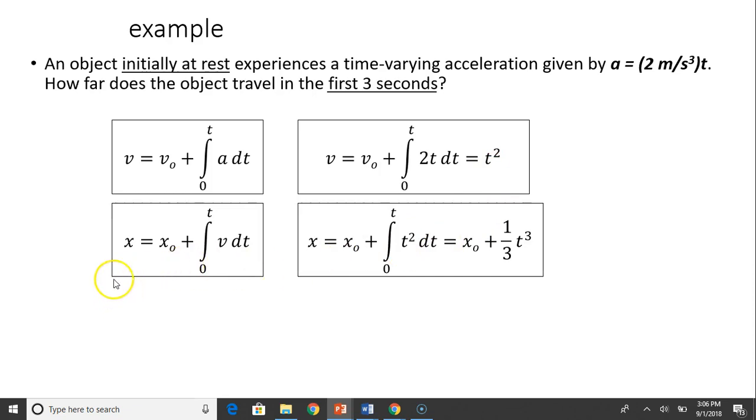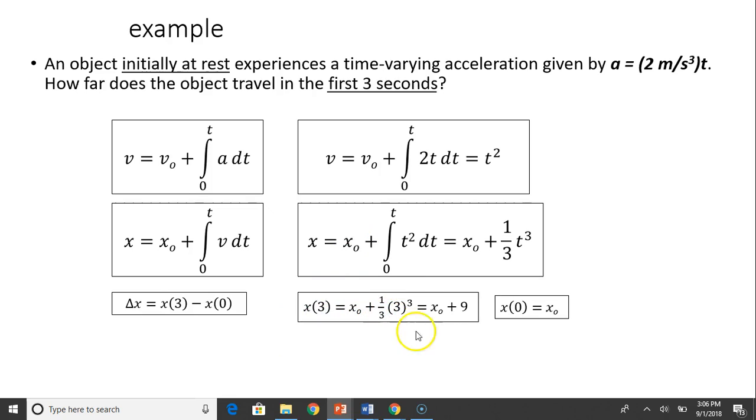Now you have to find position function. Position function x equals x naught plus integral of v dt. So what is v? v is t². x naught we don't know, which doesn't matter, just leave it. x naught plus the integral of t² dt is 1/3 t³. So how do you find the displacement between x(3) and x(0)? x at 0 is actually x naught. So x at 3 is x naught plus 9. So x(0) is x naught. So the displacement between 3 seconds and 0 seconds is 9 meters.